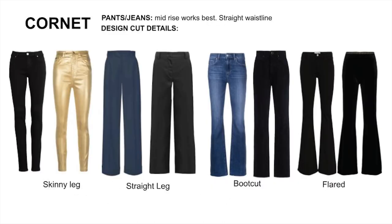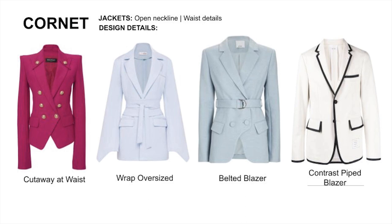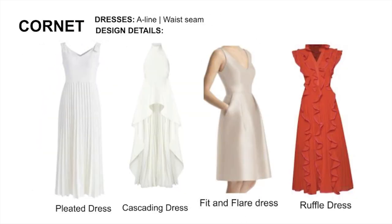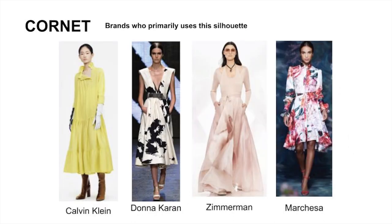For pants and jeans, mid-rise works best. Make sure the waist is not nipped in. Slim to slight flare legs work best for toned legs. For jackets, go with hip length with focus at the waist. For coats, go with an A-line shape below the knee. For dresses, an A-line with a waist seam works best. Here are some designers who design around the cornet shape.